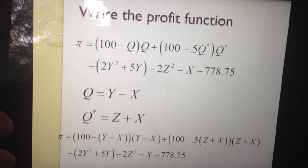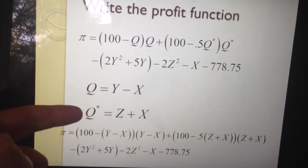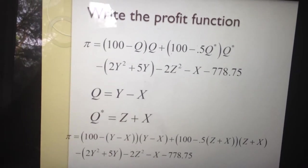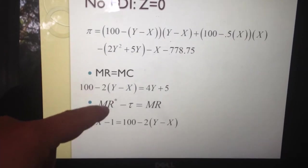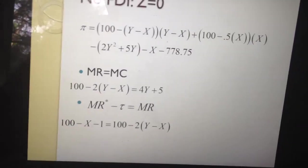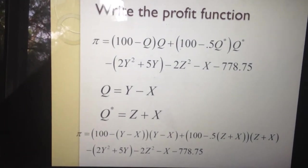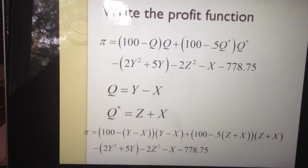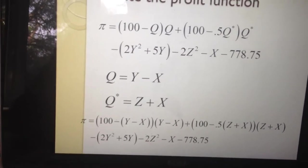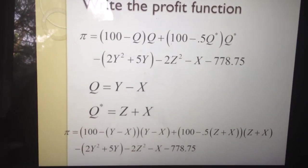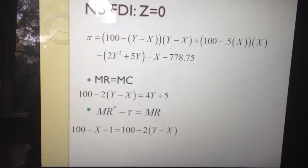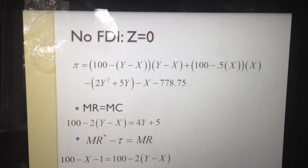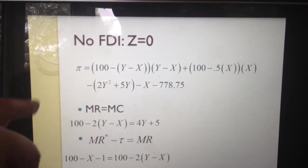The amount sold in Ireland equals what you make there minus what you send to the UK. The amount sold in the UK is what you produce there plus what you bring in from Ireland. We substitute these two quantities back into our profit equation and get a big expression — but it's not as nasty as it looks. The first case is what happens without any foreign direct investment.